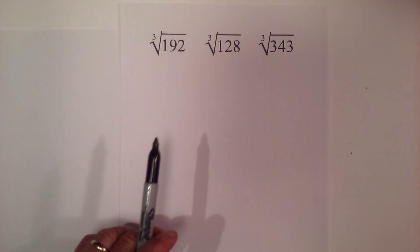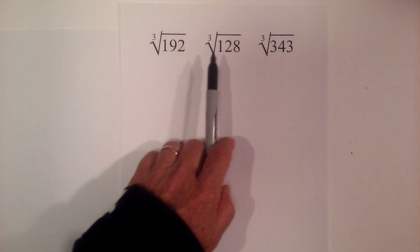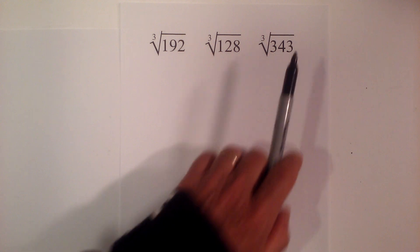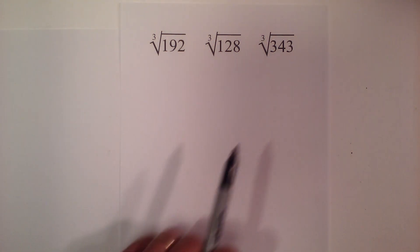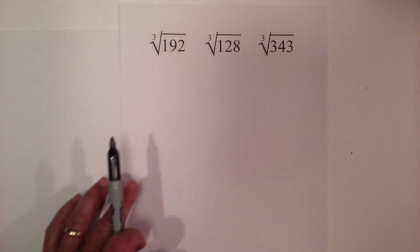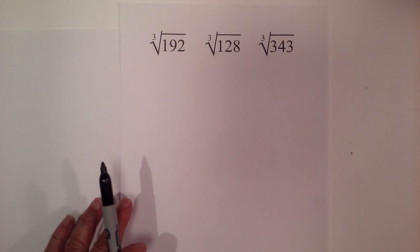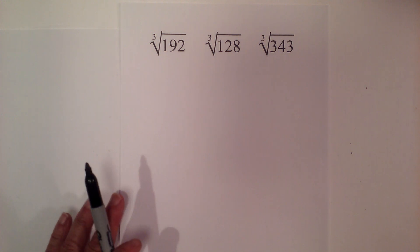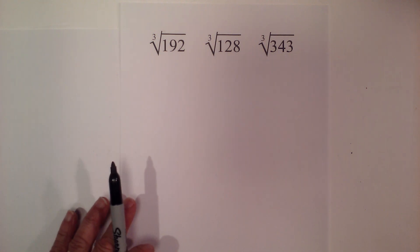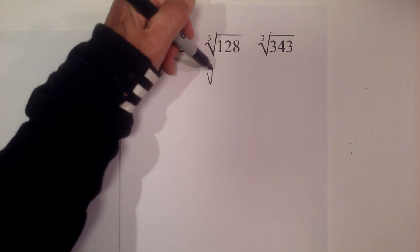In this video, let's find the cube root of 192, 128, and 343. Now one of these, 343, is a perfect cube. The rest are not perfect cubes and I'll show you how to handle that. So why don't we get started with 343.